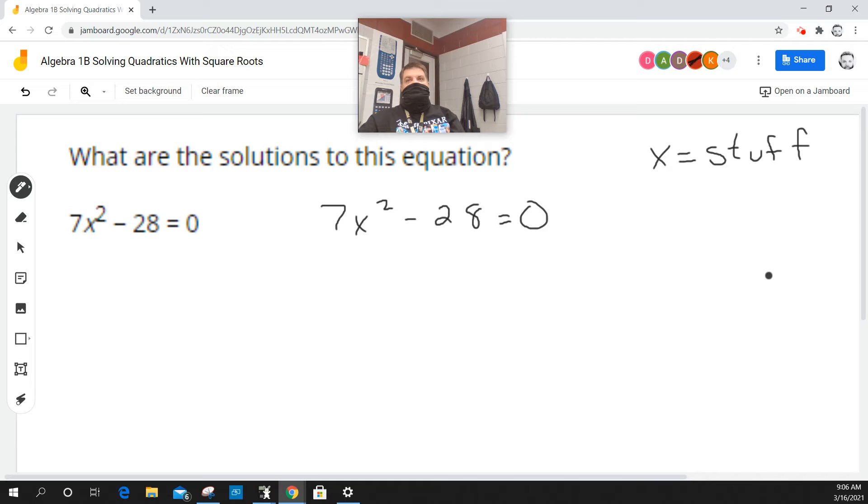What is the 28 doing to x squared? Yeah, but what is it doing right now as you look at it? It's being subtracted. So because it's being subtracted, we're going to do the opposite of subtract, which is to add. She said add, which she was saying what we need to do. Okay. So when I do that, I get 7x squared equals 28.